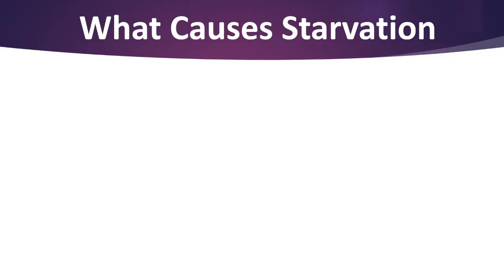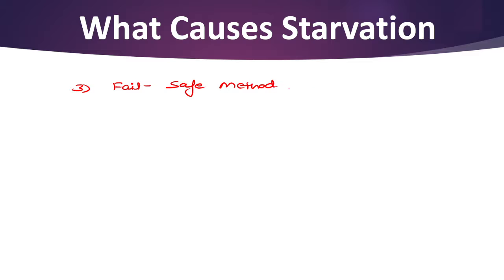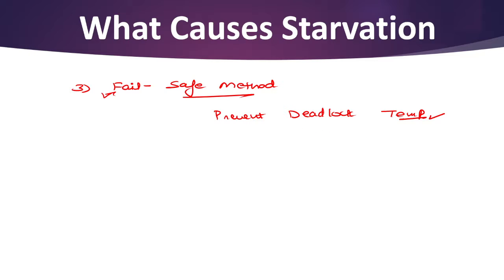Starvation is precisely also known as a fail-safe method, meaning it prevents deadlock temporarily, but it affects the system in general. That is why it is called a fail-safe method.